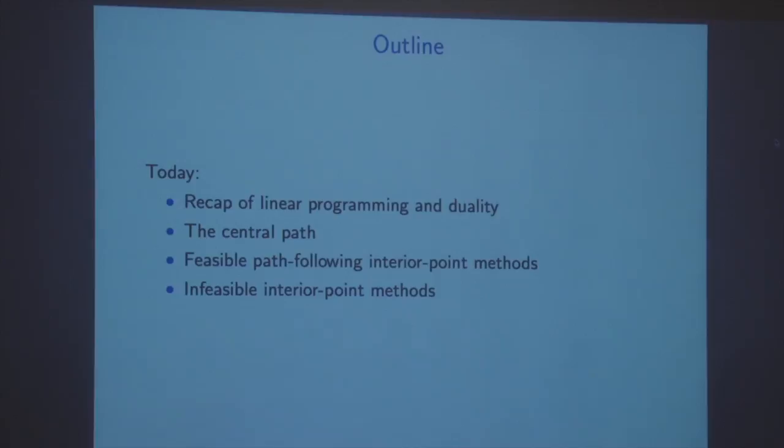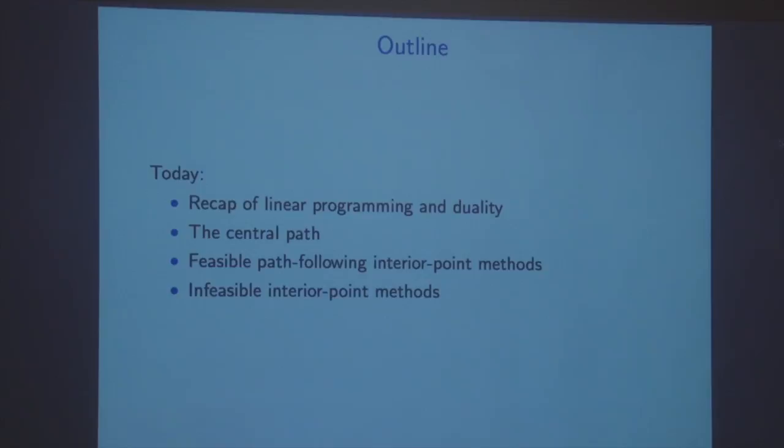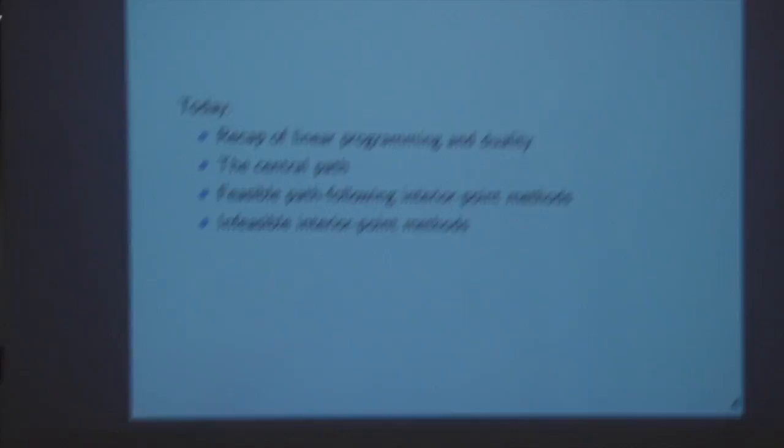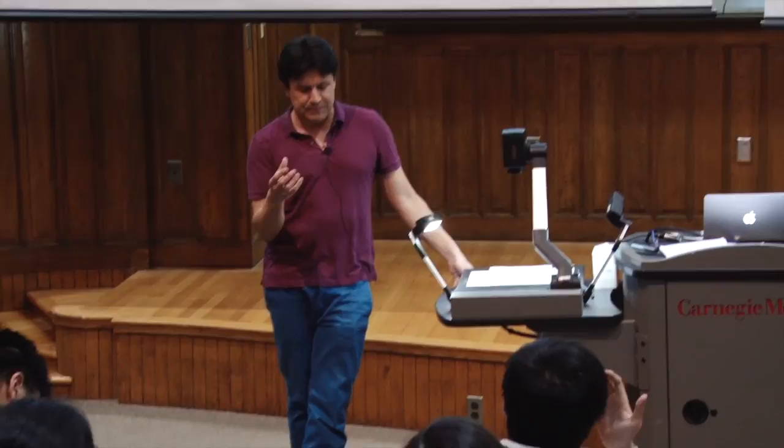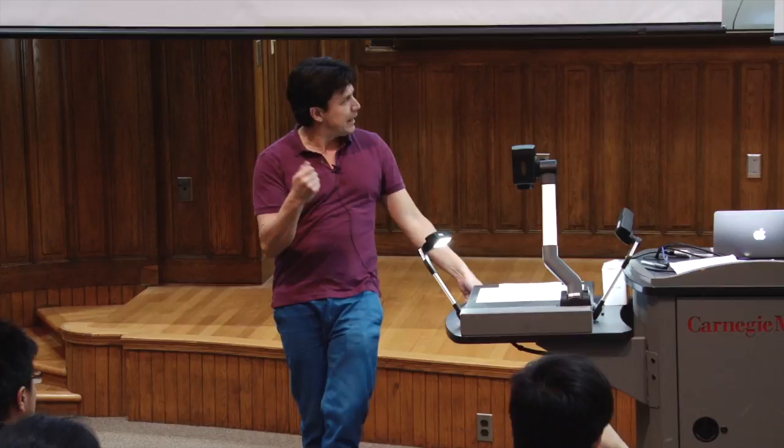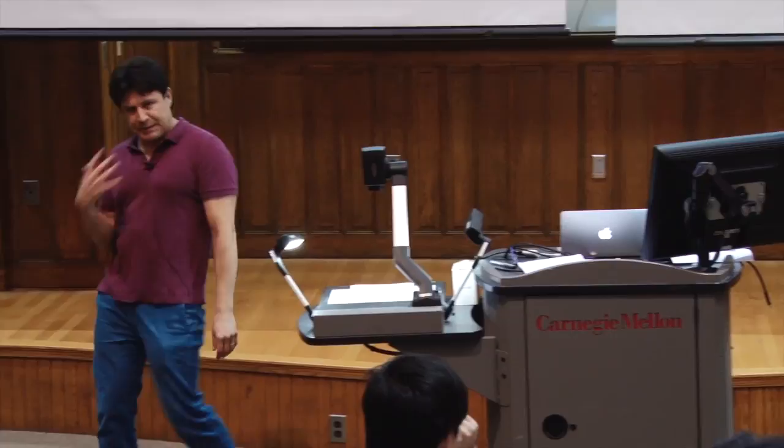So today, we are going to look at the same idea in a bit more detail, and in particular we're going to look at that in the context of linear programming. We'll talk about the central path, which is essentially the same object that Ryan spoke about last time. And the main purpose of today's discussion is to describe a family of interior point methods called primal dual path-following interior point methods. Let me start by recalling linear programming and linear programming duality.